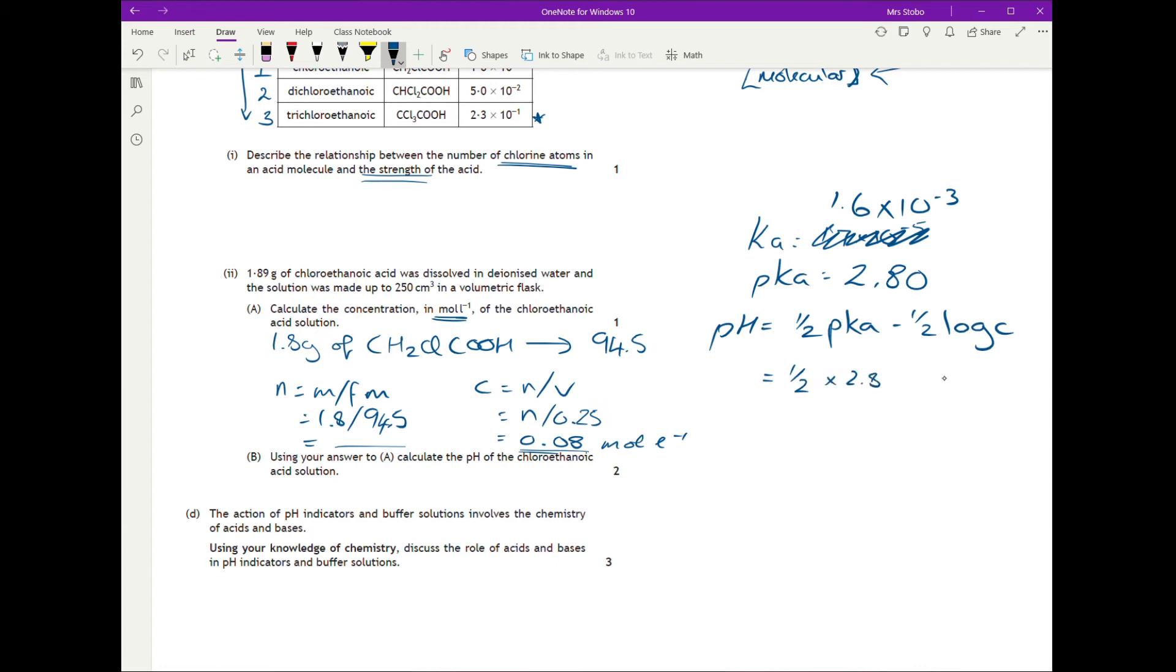So we've got 1.6 times 10 to the minus 3. We're looking for the negative log of that, and that gives you 2.80. Right. So I've now got pKa. Now that one is much easier. So I'm just doing a half times 2.8 minus a half log of 0.08. Plug it all in, careful with your brackets. It'll give you 1.95. The actual answer the mark scheme was 2. We'd accept 1.95.